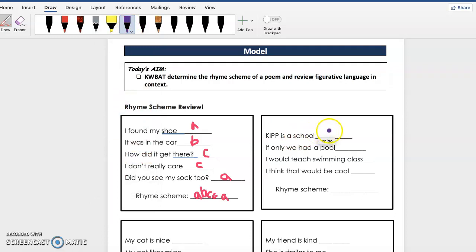Good, so let's go ahead and use a different color and let's move on to the next poem. KIP is a school. School is the first word, and so I'm going to give it A. If only we had a pool. Hmm, school and pool rhyme, and so guess what, guys, what letter am I going to give it? Yes, I heard somebody say A because it rhymes. I would teach swimming class. Class doesn't rhyme with pool and school, so guess what, I'm giving it its own letter, which is B. I think that would be cool. So cool rhymes with both pool and school, and so we're going to give that an A.